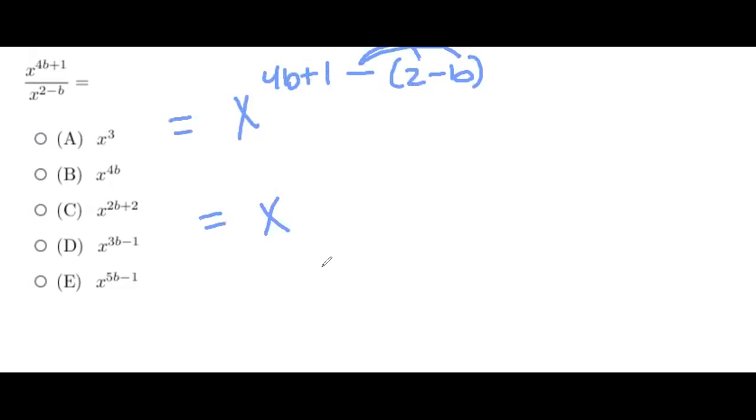So now when we do our next step, we're just going to combine like terms. So this here is going to be our 4b, and this is going to become a plus b, again, since we're distributing that negative in. So that's going to become a 5b, and now we have 1 minus 2, which is just negative 1. So that would give us our answer choice of E.